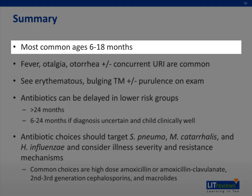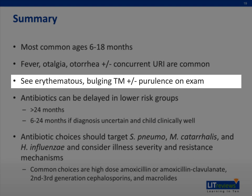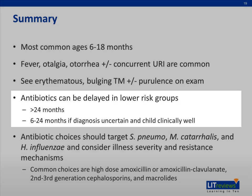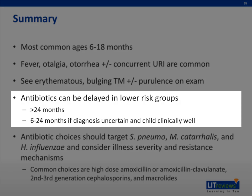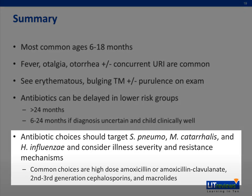In summary, acute otitis media occurs most commonly in children aged 6 to 18 months. Patients commonly present with fever, otalgia, otorrhea, and a concomitant or antecedent URI. They tend to have an erythematous bulging TM on exam, and purulence may be present behind the TM. Treatment with antibiotics can be delayed in lower-risk groups, such as well-appearing children with an uncertain diagnosis who are 6 to 24 months old, and otherwise healthy children who are greater than 24 months old. When antibiotics are prescribed, they should target Strep pneumo, Moraxella catarrhalis, and non-typable H. flu. The severity of a patient's illness and their risk of infection with a resistant organism should also be considered when selecting an antibiotic.